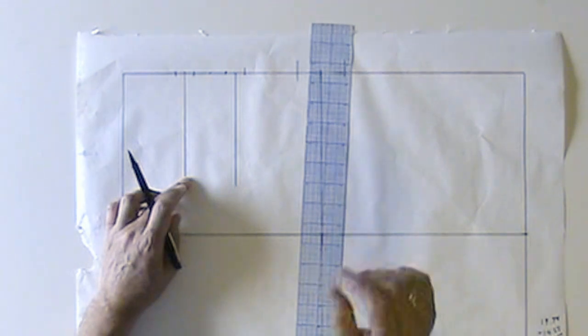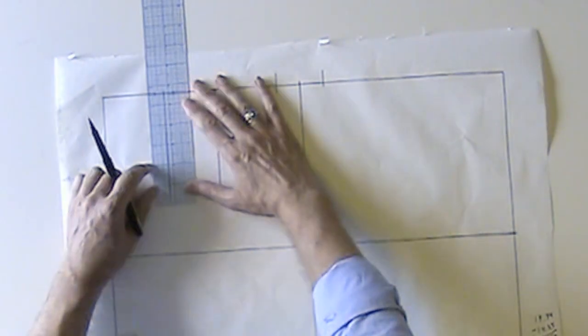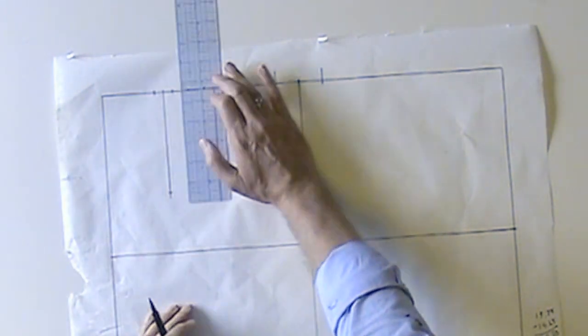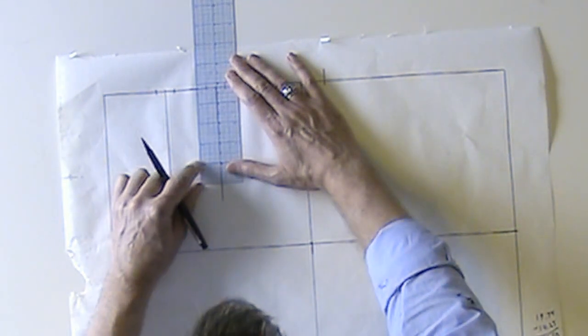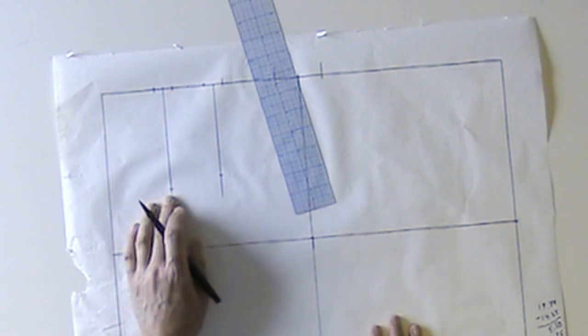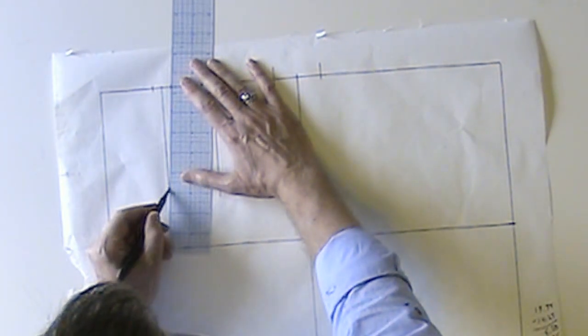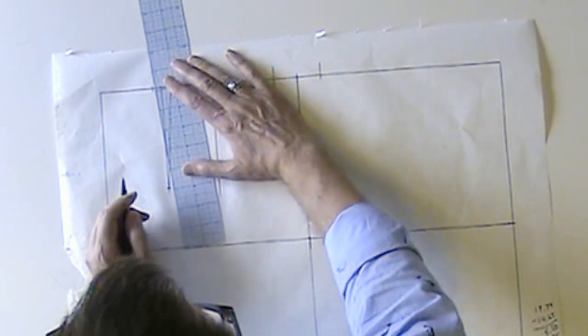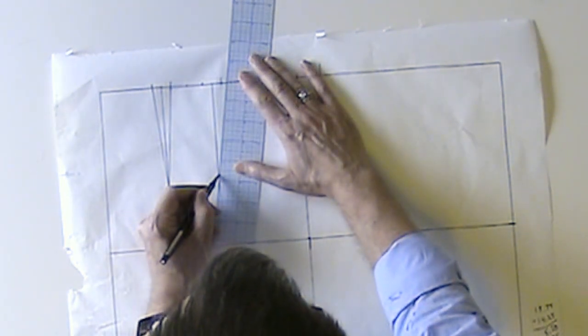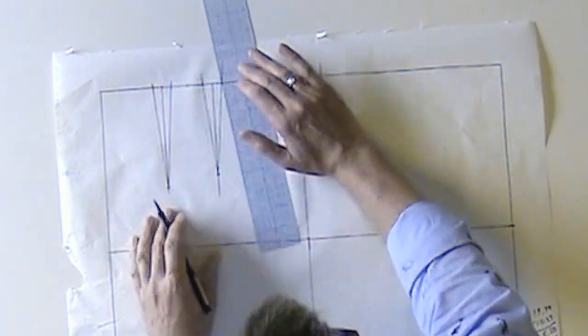Now when we did a single dart we made it 5 and 1/2 inches down from the waist in length. Because these darts are narrower it can be a little shorter. So I'm going to make this one closest to center back 5 inches, and the one a little closer to the side seam I'm going to make 4 and 1/2. You can make them both the same length, but I think it's more visually pleasing if the dart closer to the side seam is a little shorter. Now we'll join these points for our 2 back darts.